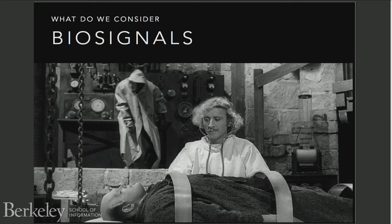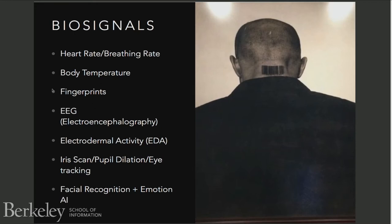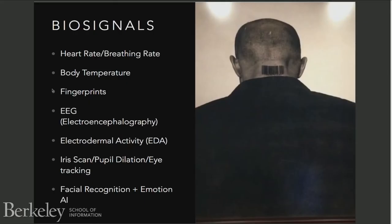What do we consider to be bio-signals? We typically include — and this is not an exhaustive list — heart rate and breathing data, body temperature, fingerprints or other traditional biometrics which may have unique spacing unique to you. Bio-sensing does not always equal biometric; I see them confused with each other. We also have EEG data, which is electroencephalography, electrodermal activity or EDA, which you may know as galvanic skin response, iris scans, pupil dilation, eye tracking, and retinal scanning.